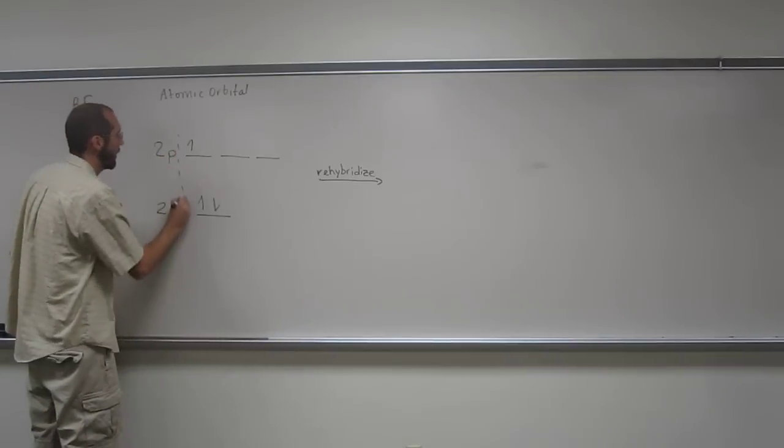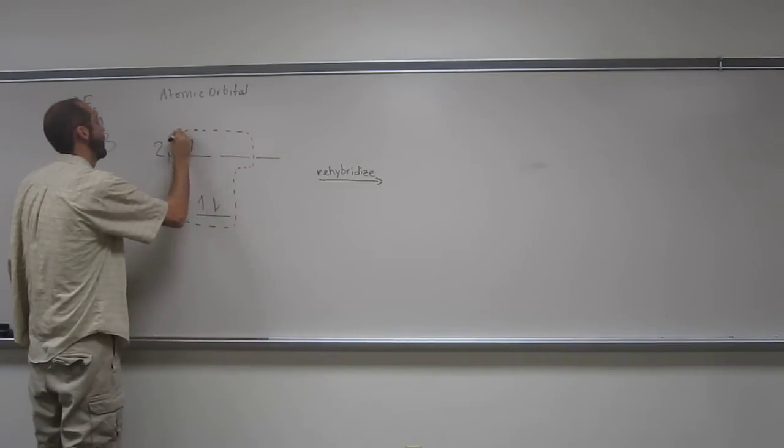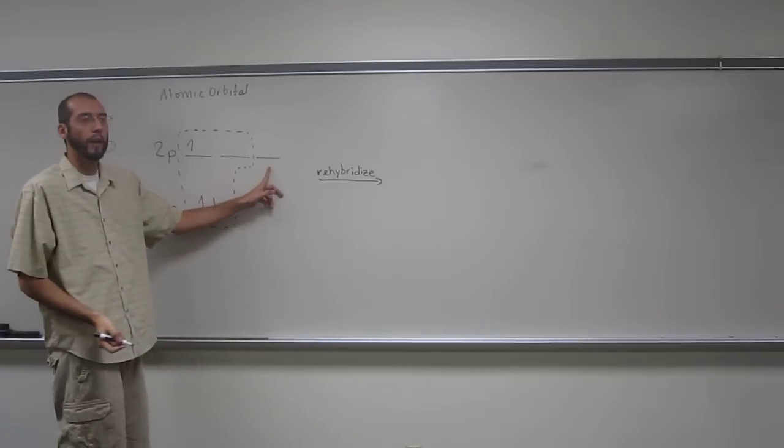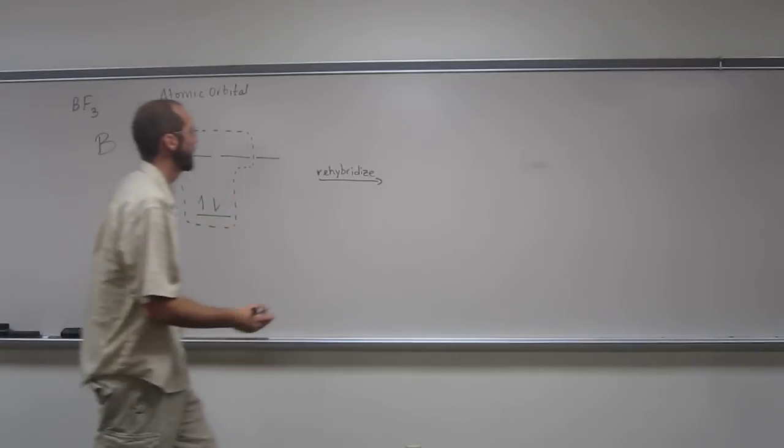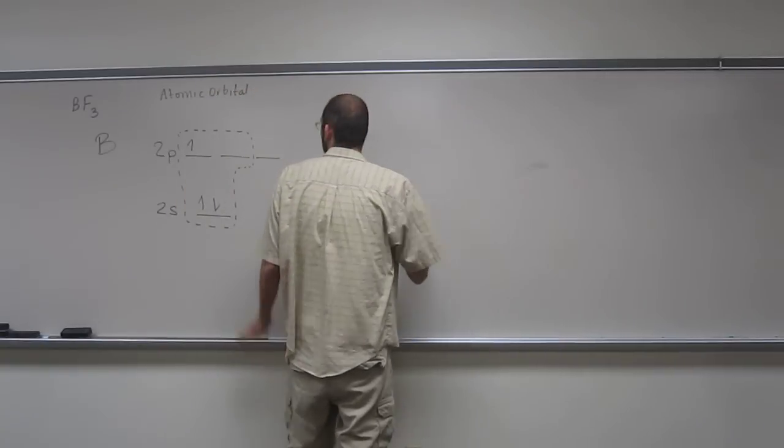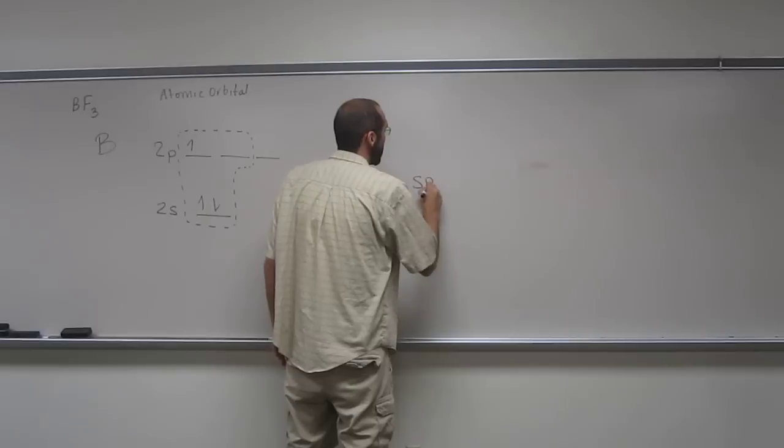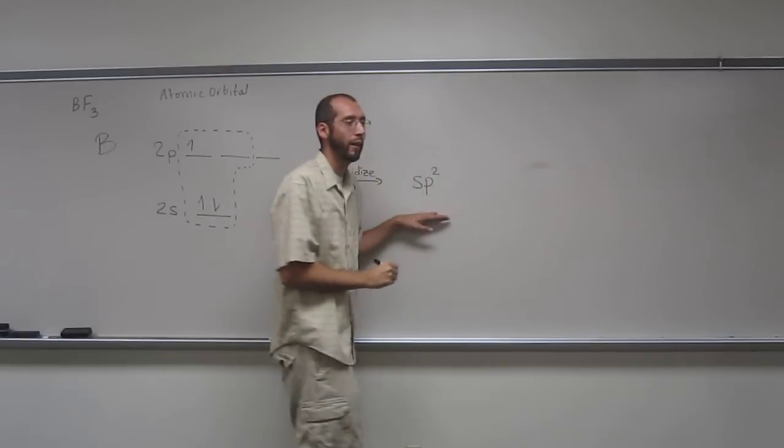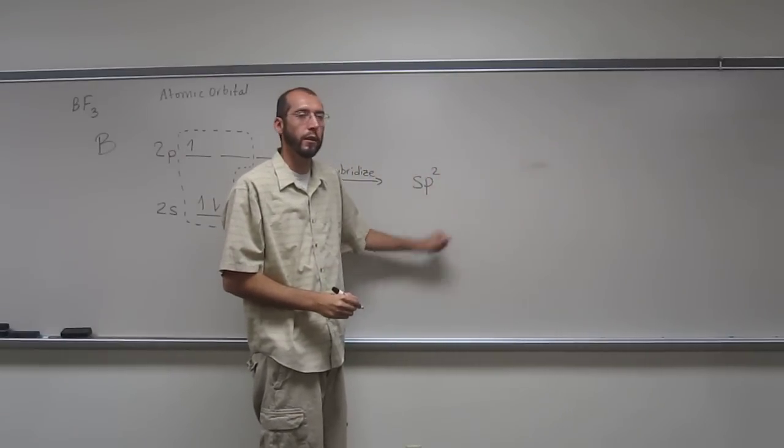So what three are we going to take? 2Ps and 1s. And we're going to have 1, 2P left. So let's go ahead and do that. Since we took 1s and 2Ps, we're going to make sp2 orbitals. So that gives us a clue as to what the bond angle should be for these bonds.